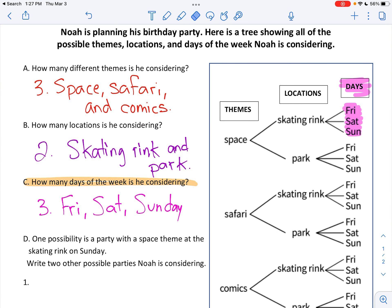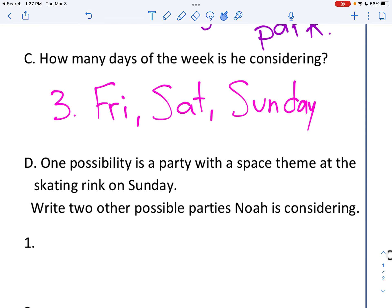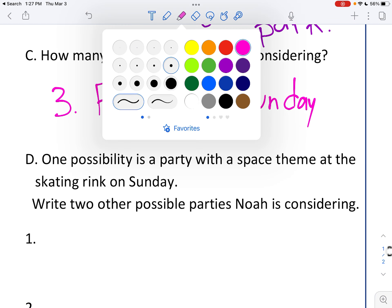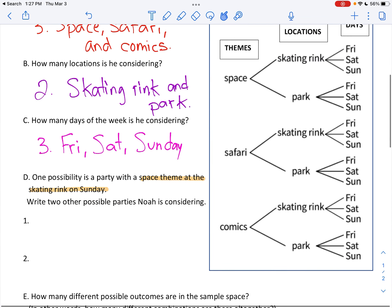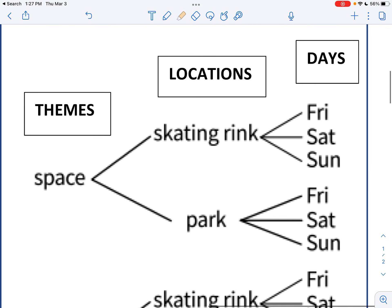Okay. So now that we know how to read that, the next letter, D, says: One possibility is a party with a space theme at the skating rink on Sunday. I'm going to highlight that in the words. Let's look at what that looks like here. A party with a space theme, and I'm going to follow the branch up to the skating rink, down to Sunday. Do you see how all three of those are connected? That is one possibility.